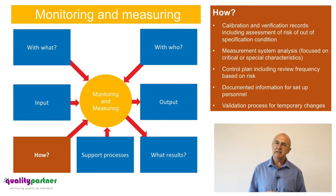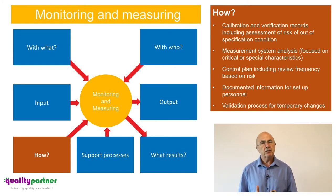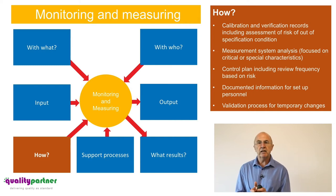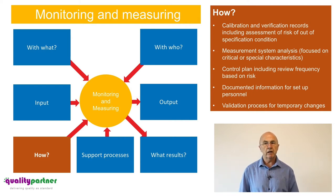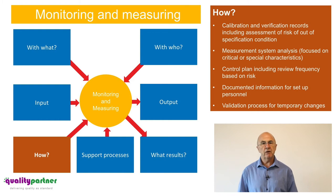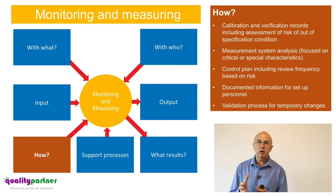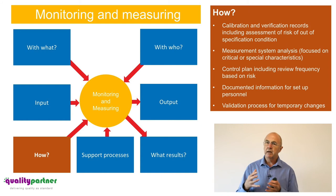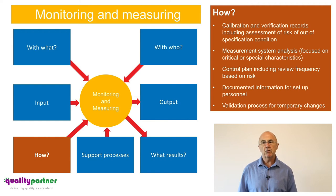Measurement system analysis has no fundamental change, but when we select equipment for MSA we take into account the criticality of equipment used to measure special characteristics. We still have to do MSA on each type of equipment specified on the control plan, but if we have 10 micrometers and one is used to measure a special characteristic, that's the one we should focus MSA on. We don't ignore the others, but we pay special attention to measuring systems used for critical or special characteristics.